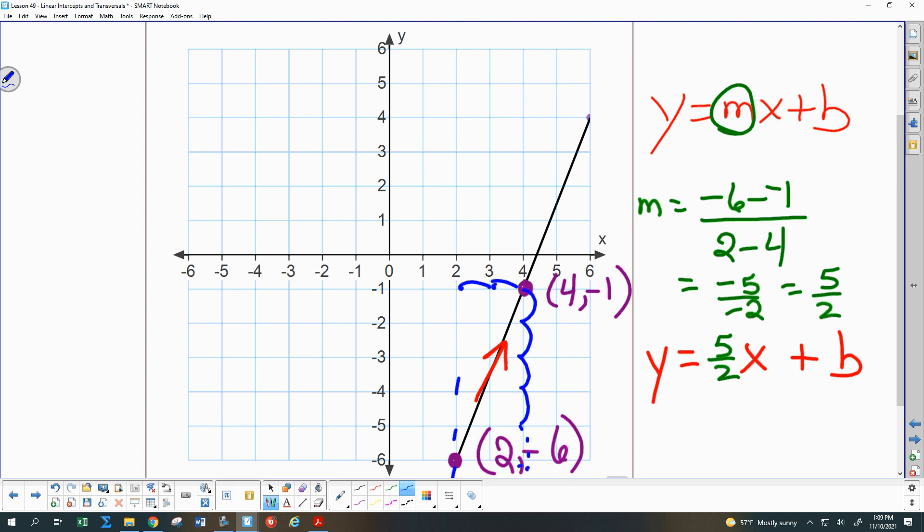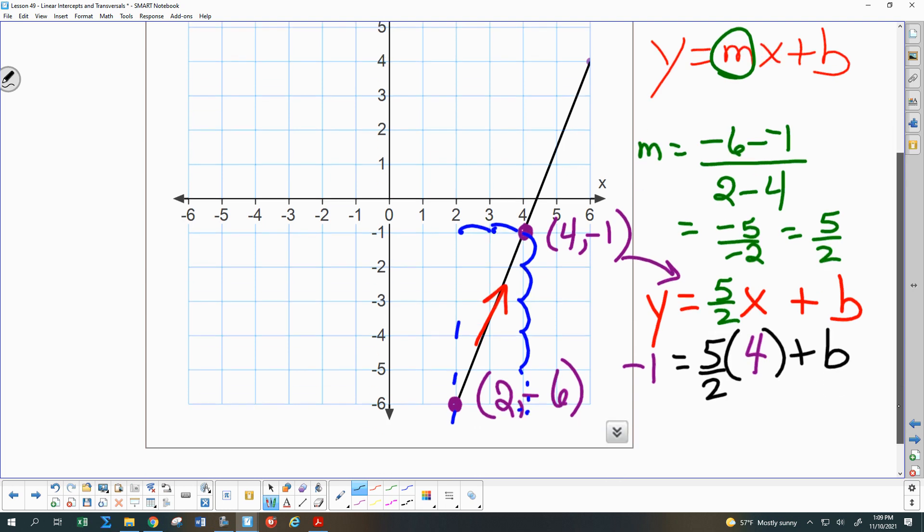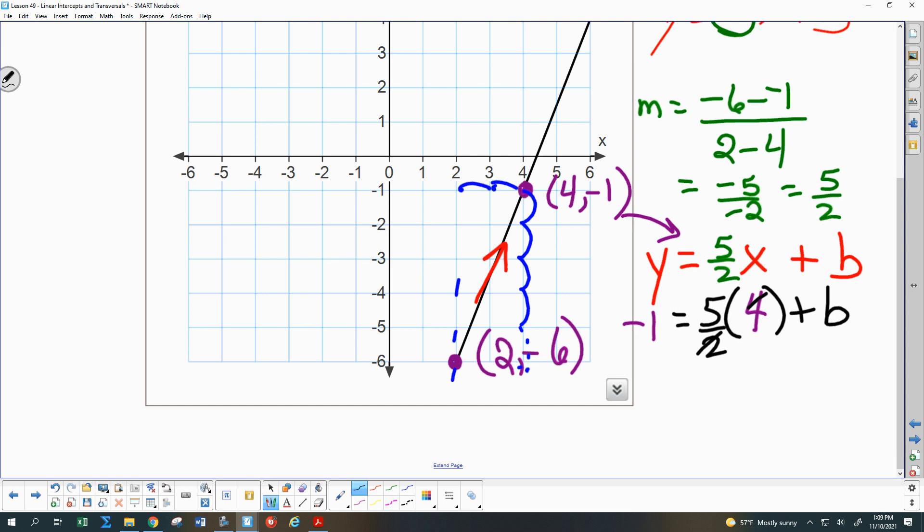So we will then plug those coordinates in. So I'll put the 4 in for the x, the negative 1 for the y. I'll keep everything else there. And let's see. That becomes a 10. So if I subtract 10 on both sides, b needs to be negative 11.